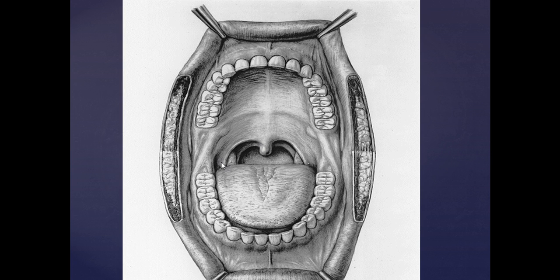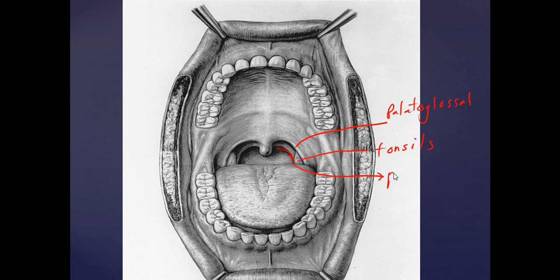You also see some pillars. During your anesthesia or ear, nose, and throat rotation you may be talking about the pillars. This is going to be your palatoglossal arch. In between your posterior arch, you're going to see a tiny little mass of lymphoid tissue — this is going to be your tonsils. If you have a tonsillectomy, this is the tonsil that gets removed. Next you've got the posterior arch, which is going to be your palatopharyngeal arch.